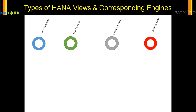The golden question is when to use these views. It all depends on the data you are trying to consume. If you are trying to consume the master data — say you want to know the text of a material — then the attribute view should be used. When you want to consume the master data along with the transaction data, then the analytical view should be your choice.